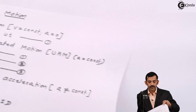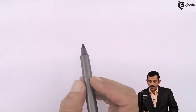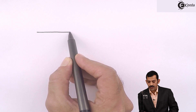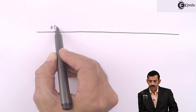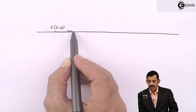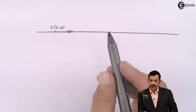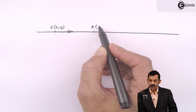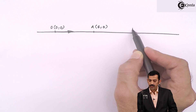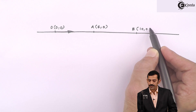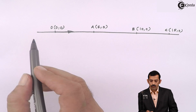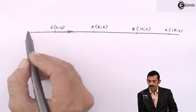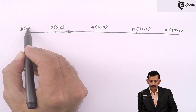Assume a particle moves along a horizontal straight line. We take the origin at coordinates (0, 0), and the particle moves rightward, passing through point A at (6, 0), point B at (10, 0), point C at (15, 0), and there is also a point D on the left side of the origin at (−5, 0).